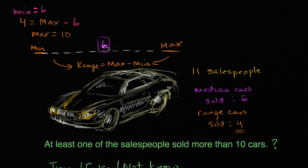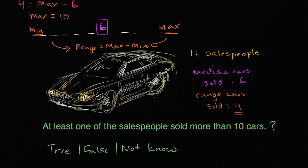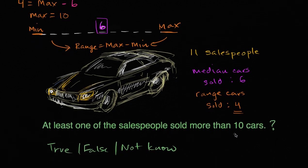We can't take a higher minimum because we know six is going to be one of the values. We could try a lower minimum value — five, four, three, two, or one — but then the maximum would go down even more, because the maximum is no more than four larger than the minimum. So knowing one salesperson sold six cars, the maximum any salesperson could have sold is 10. So the statement 'at least one salesperson sold more than 10 cars' has got to be false.